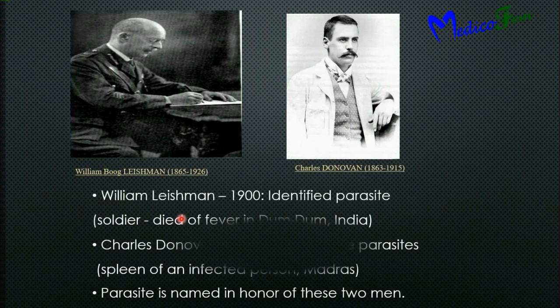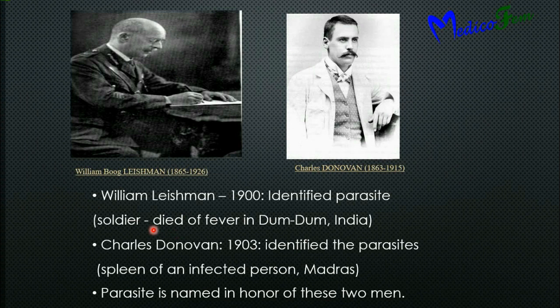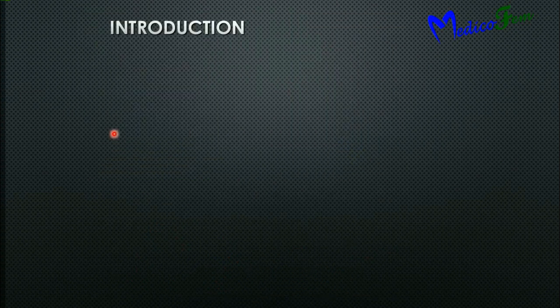Scientist William Leishman first identified the parasite from a soldier who died of fever from India. Then Charles Donovan in 1903 identified the parasite from the spleen of an infected person in Madras, India. The name Leishmania donovani was given in honor of these two scientists.